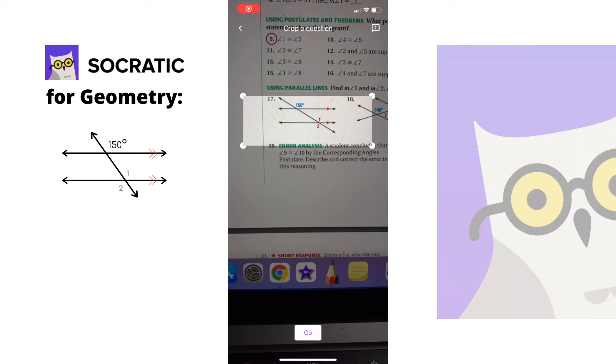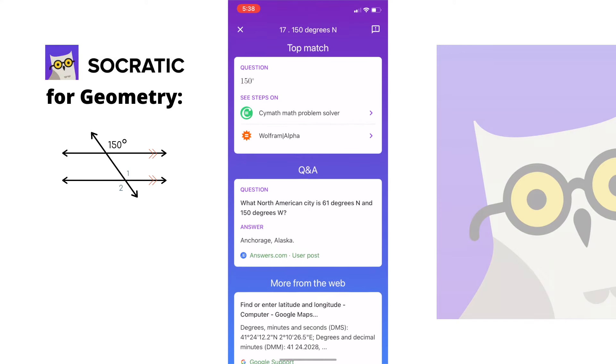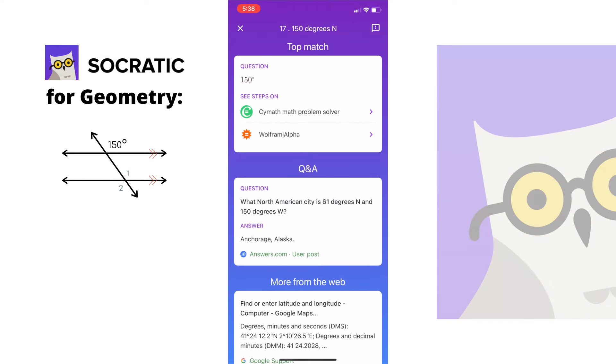For geometry, it's supposed to find the measure of angle one and two, but it just registered as 150 degrees. It's just repeating the 150 degrees that was already on the problem. And then now it's talking about maps and longitude and latitude and Alaska. I don't think Socratic got it at all. We're in the wrong subject. That was a weird one.